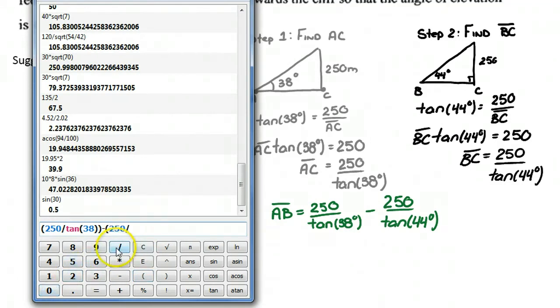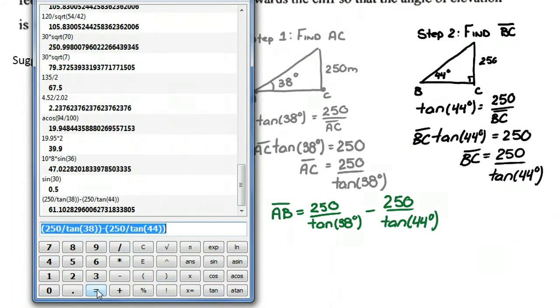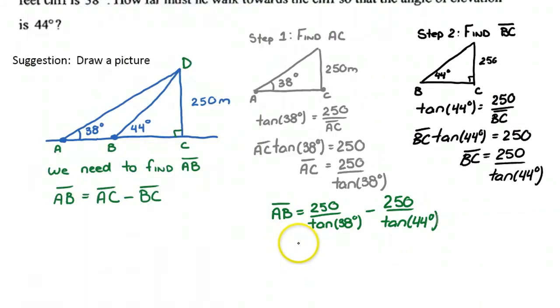Minus 250 divided by tan of 44 degrees, and I hit equals, and I get approximately 61.10. Let's say approximately 61.1. So AB is approximately 61.1 meters.